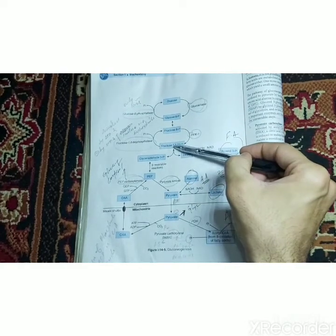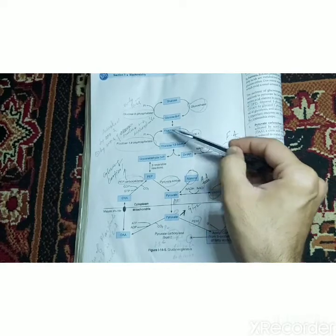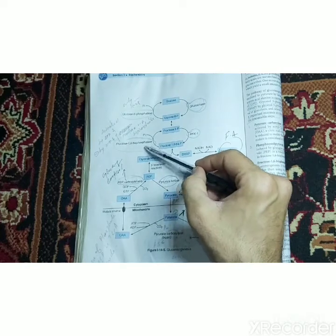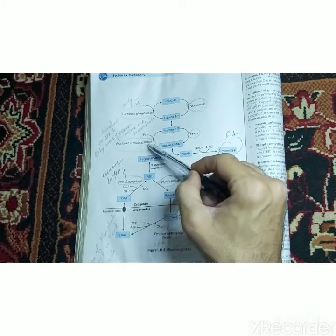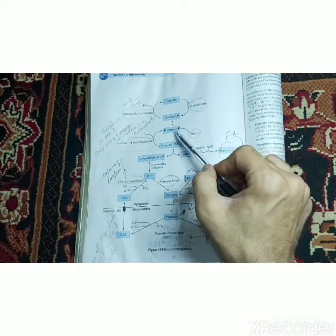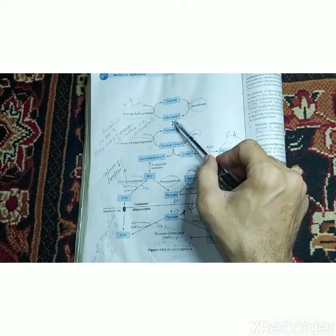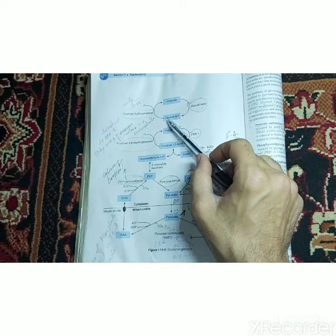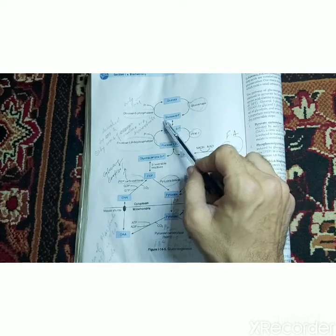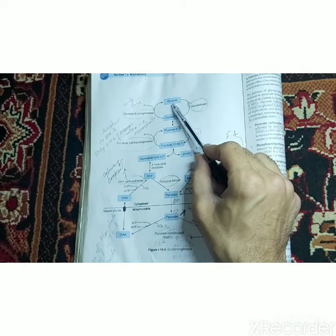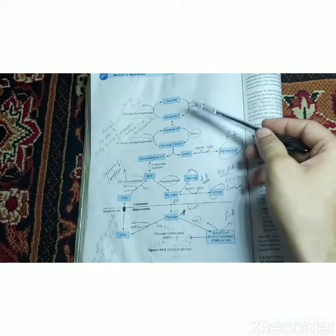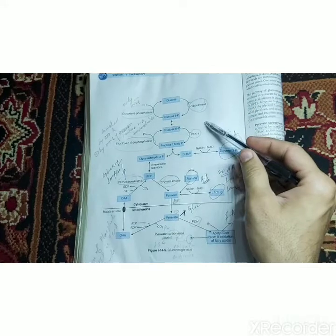Fructose-1,6-bisphosphate is converted into fructose-6-phosphate by removal of one phosphate molecule by fructose-1,6-bisphosphatase. Fructose-6-phosphate is then converted into glucose-6-phosphate. The last important step is conversion of glucose-6-phosphate into glucose, which is then ready to be delivered to other tissues of the body. This gluconeogenesis pathway occurs in the liver.